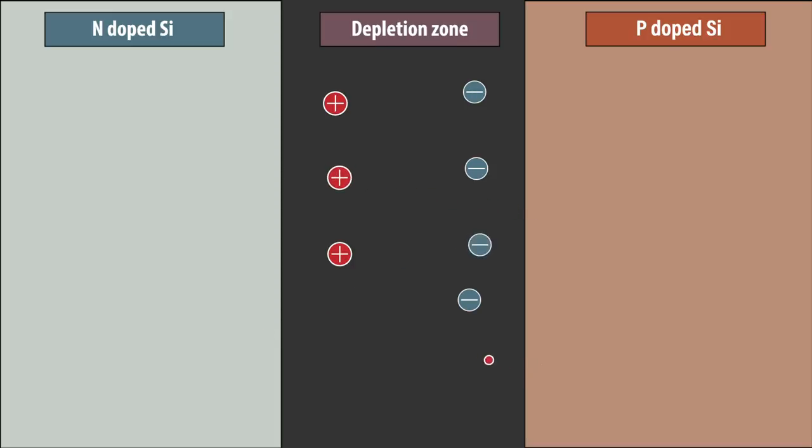The depletion region generates the electric field between the two doped regions, and it is this electric field that allows the solar panel to work. Now, when the electron is liberated by the light, it will move towards the N-doped region, while the hole that was left by it will move towards the P-doped region. Now, by connecting the two sides with a wire, we can generate a current.